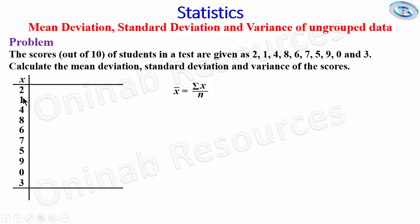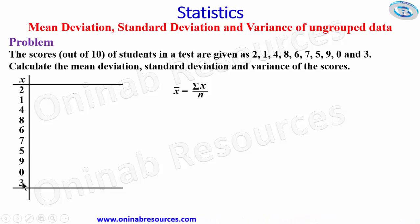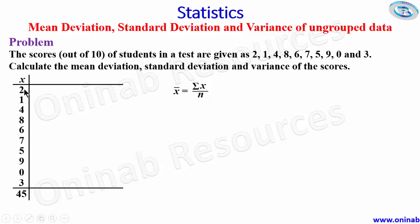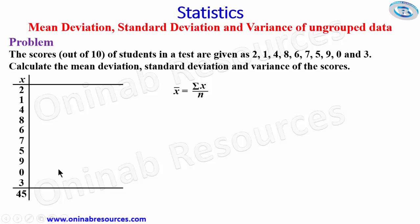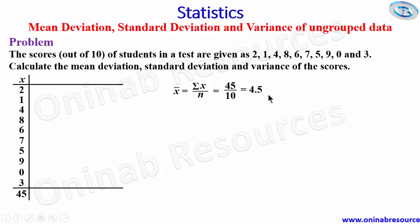Summing up all the scores: 2 + 1 + 4 + 8 + 6 + 7 + 5 + 9 + 0 + 3 gives us 45. So summation of x is 45, and n is 10 — we have 10 students. Substituting into the formula, we have 45 over 10, and 45 over 10 is 4.5. So the mean score is 4.5.